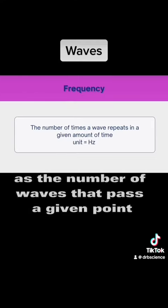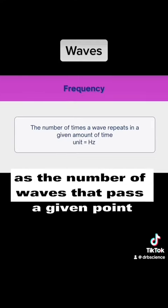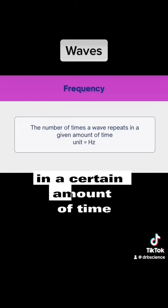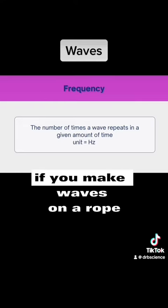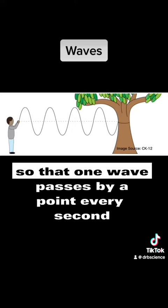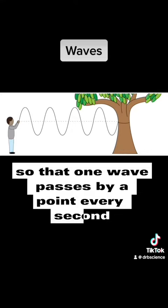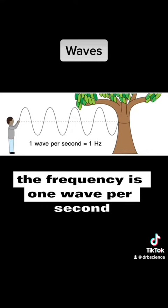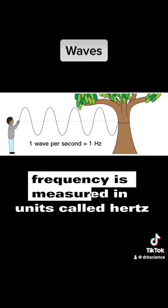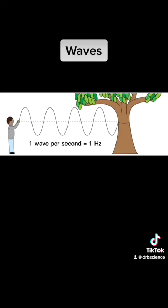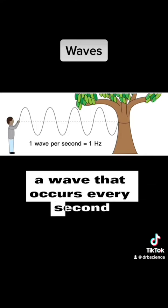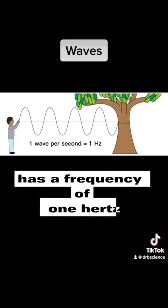You can think of frequency as the number of waves that pass a given point in a certain amount of time. For example, if you make waves on a rope so that one wave passes by a point every second, the frequency is one wave per second.